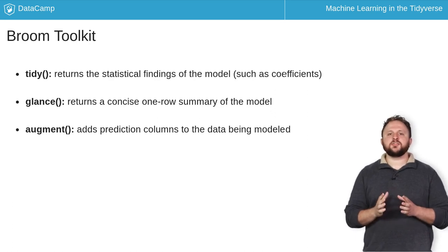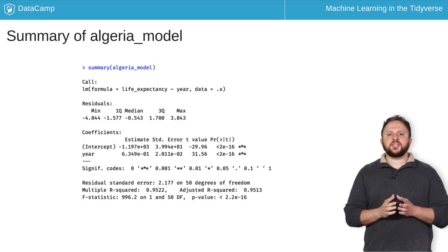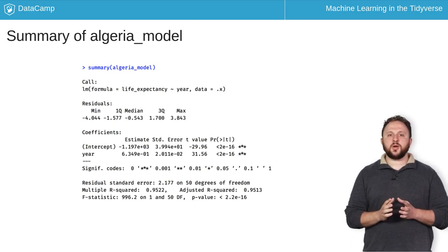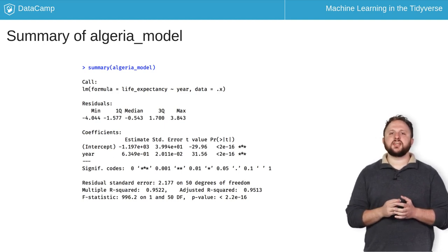Let's explore each of these in greater detail by reviewing the results of the linear model that you created for Algeria. If you look at the summary of the Algeria model, you can see that there is a lot of useful information here. However, this information is not particularly easy to extract directly from the object as it is to simply print it. But, using tidy and glance, you can easily extract this information into data frames.